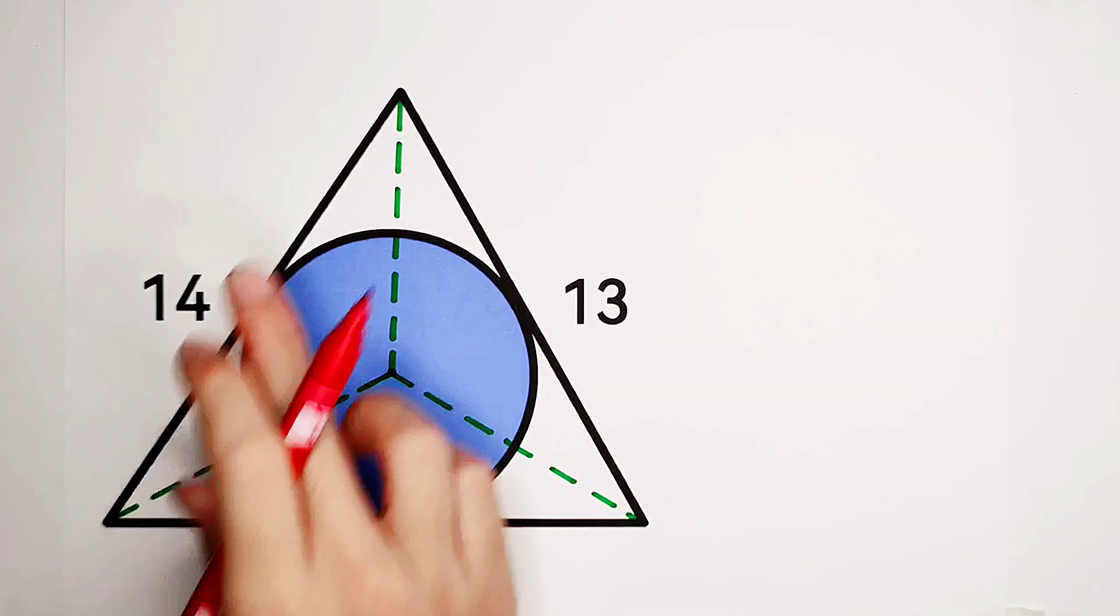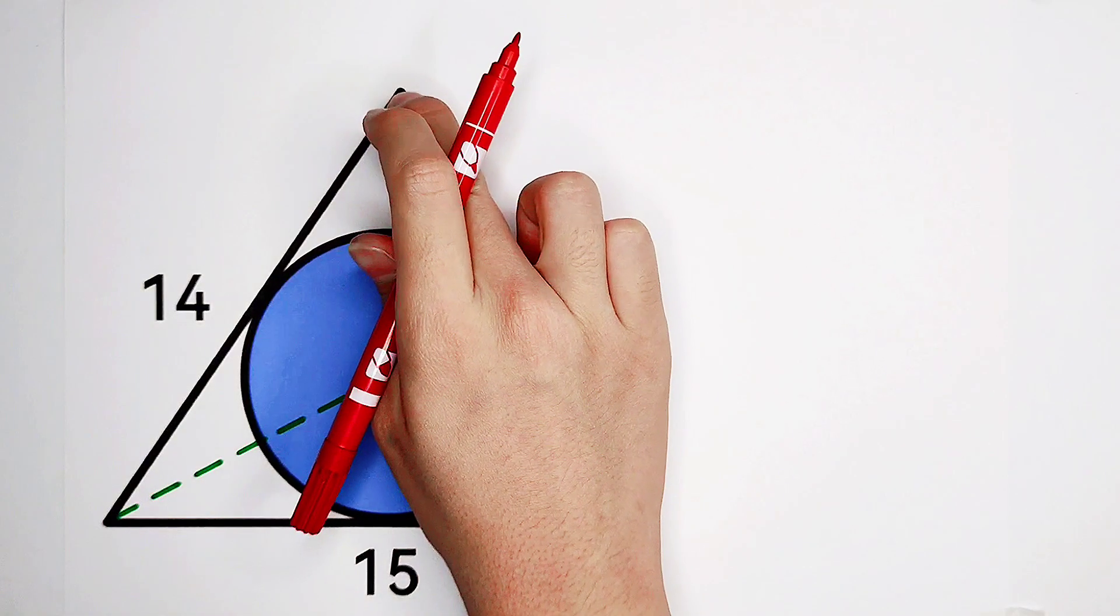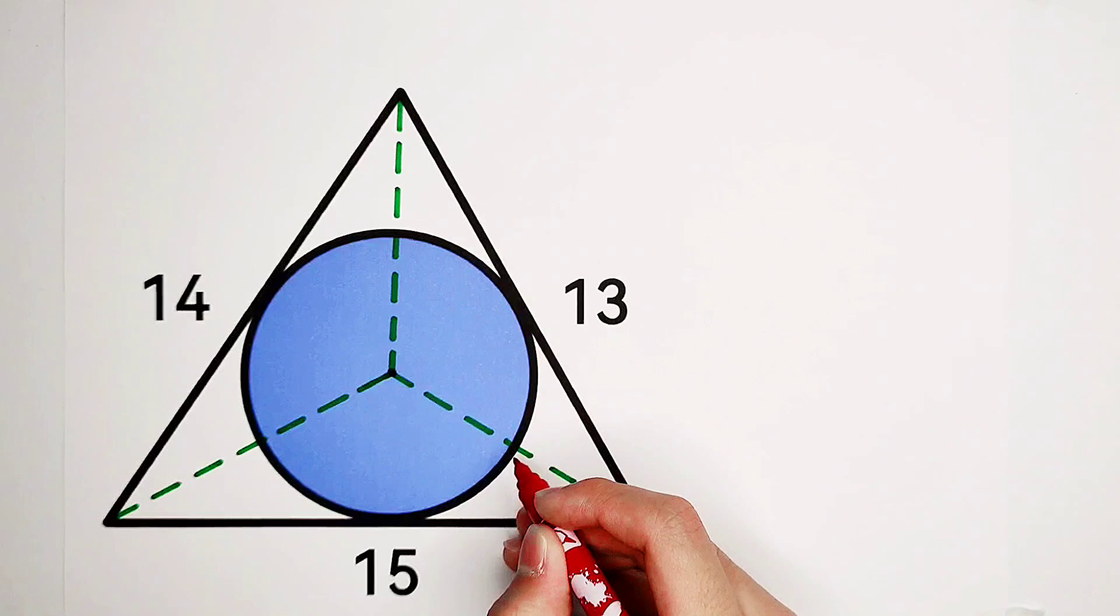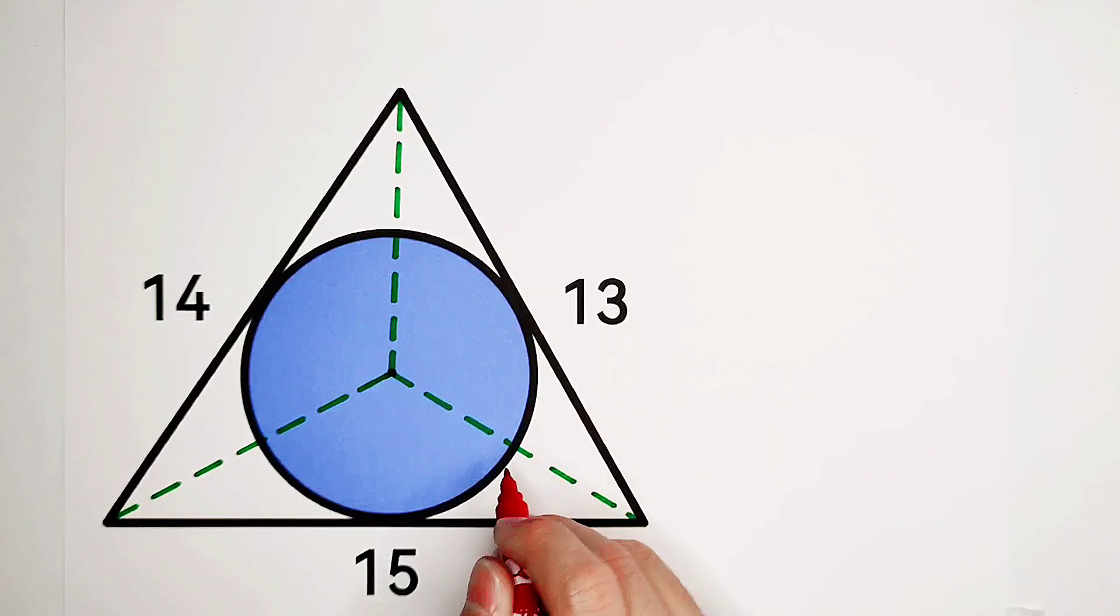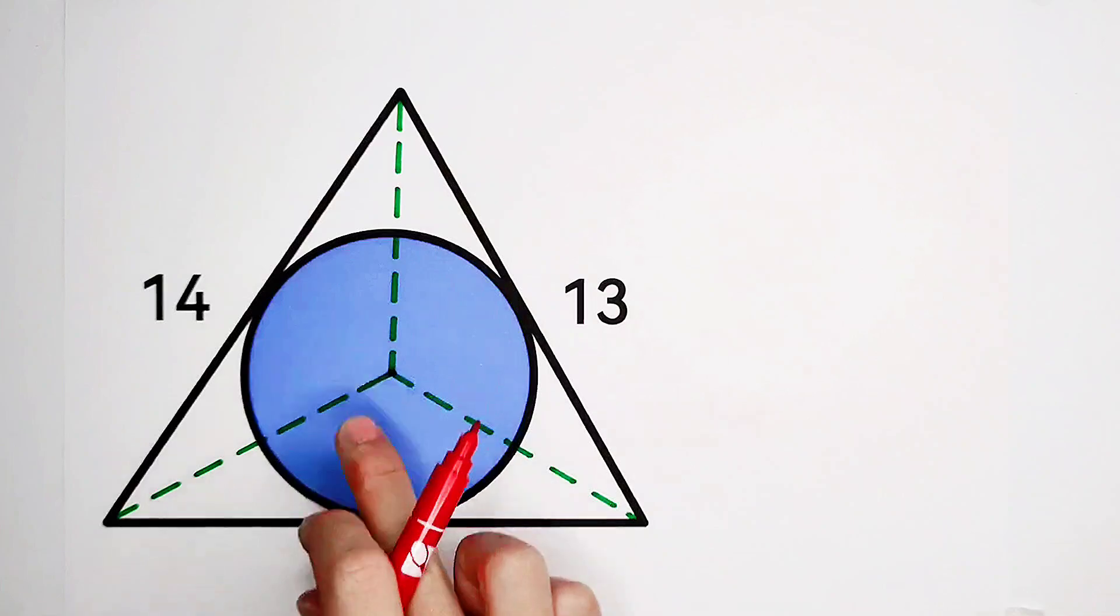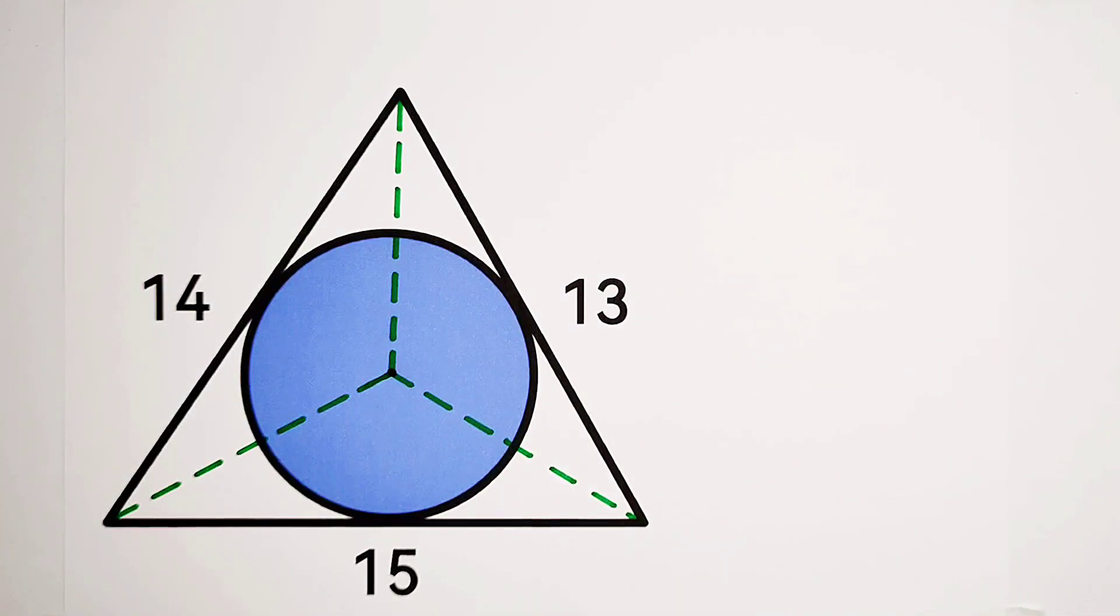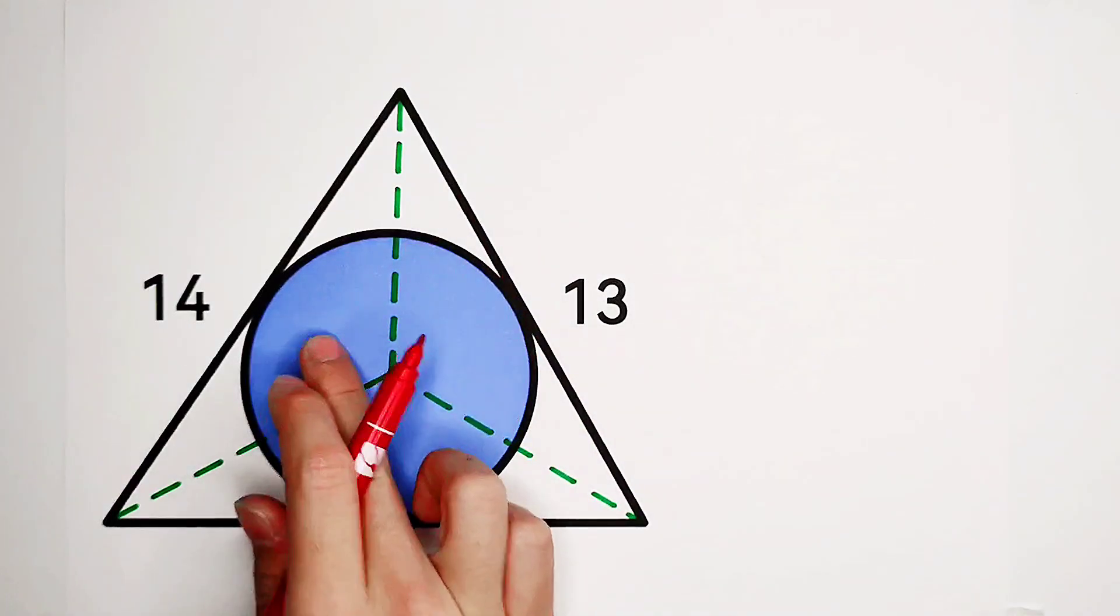I like to express the area of the big triangle with the radius of the circle, R. The area of the big triangle is the sum of the areas of these 3 small triangles.